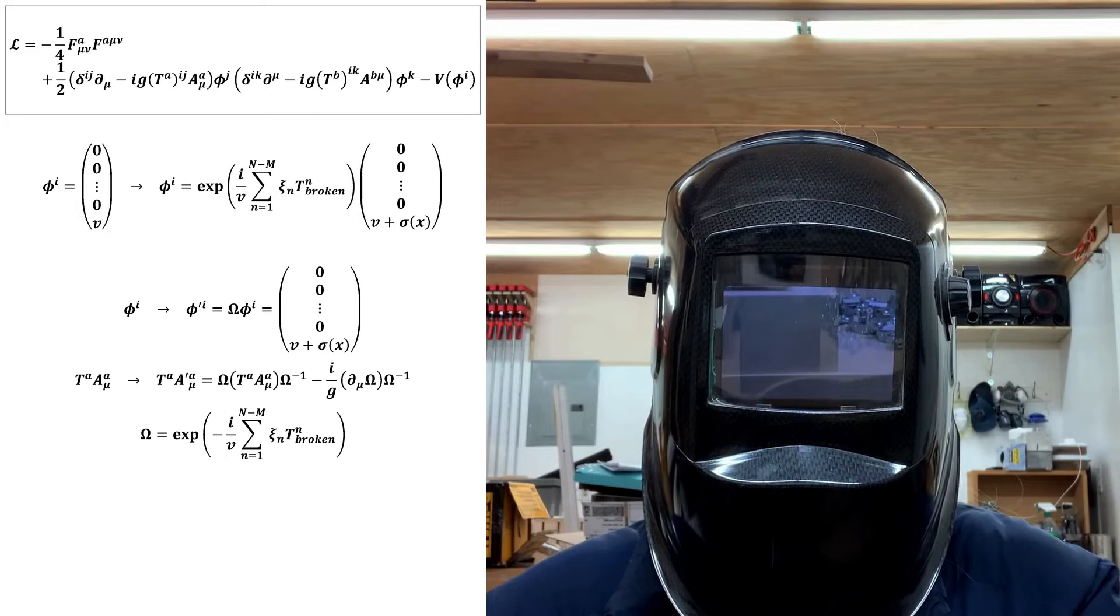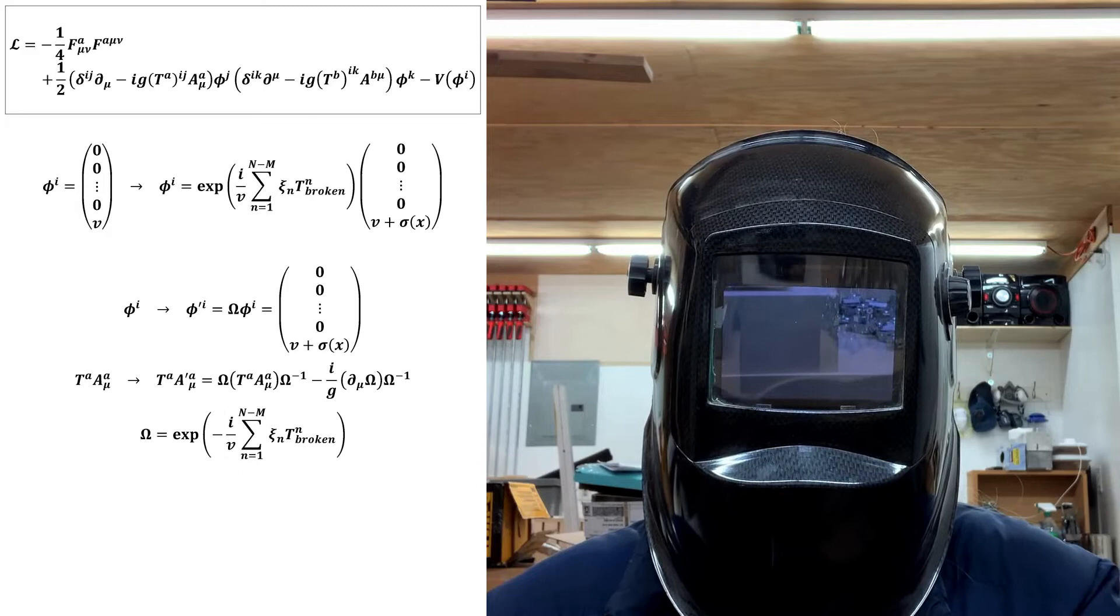From this, we can write the standard scalar field reparameterization, and the gauge transformation that absorbs the Nambu-Goldstone bosons into the vector fields to become massive.